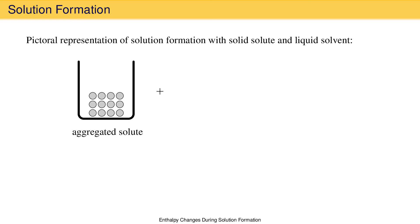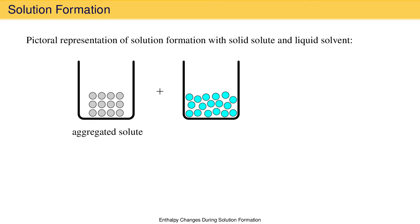We can represent the liquid solvent with the blue circles representing the particles that make up the liquid. These particles could be water molecules if we were making an aqueous solution. Note that the particles of the solvent take the shape of the container and are more randomly arranged than the aggregated solute particles. This is just what the particles in a liquid do. When the particles making up the liquid are loosely associated like this, held together by solvent-solvent interactions, we refer to them as aggregated.